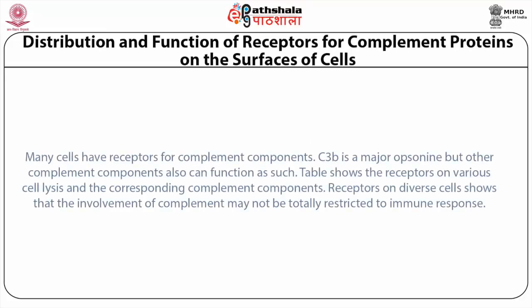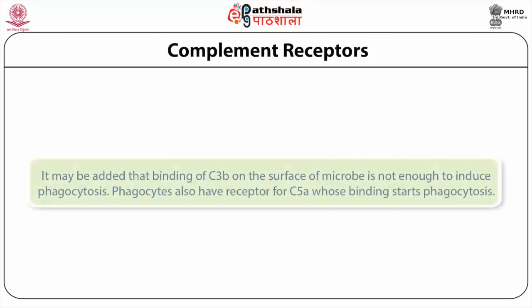Wood Jr., Alper, and Rosen at Harvard Medical School studied the consequences of defective C3 in many patients and found pronounced susceptibility to pus-producing bacterial infections. A table shows distribution and function of receptors for complement proteins on the surfaces of cells. Many cells have receptors for complement components. C3b is a major opsonin, but other complement components can also function as such. The table also shows the receptors on various cell types and the corresponding complement components.